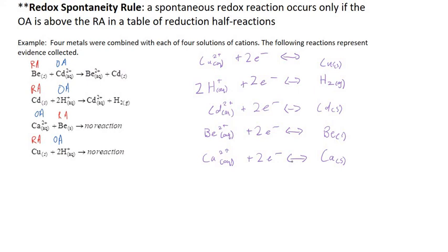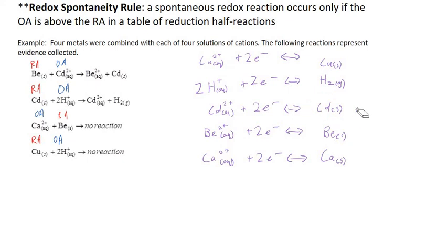We could use our table to make predictions. If I were to ask you: will a reaction of copper ions with cadmium solid be spontaneous? You would find copper ions and cadmium solid on the table and say, since the oxidizing agent is above the reducing agent, yes, that would be spontaneous. Similarly, if I ask whether hydrogen would react with calcium ions — you would find calcium ions and hydrogen and say no, the oxidizing agent is below the reducing agent, so it will not be spontaneous.